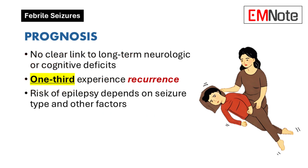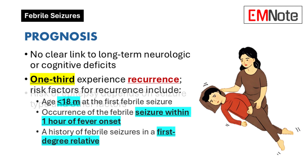Let's talk about prognosis. Parents are always worried about long-term consequences, especially the first time their child has a seizure. The good news is most children who have a febrile seizure have excellent outcomes — they don't have any lasting neurological problems or cognitive impairments. About a third of children will have another febrile seizure, so recurrence is a real possibility. Are there any factors that make it more likely?